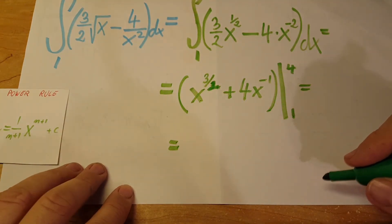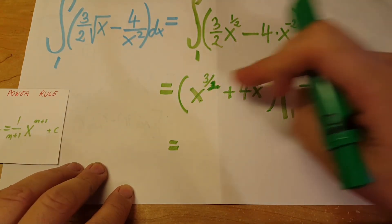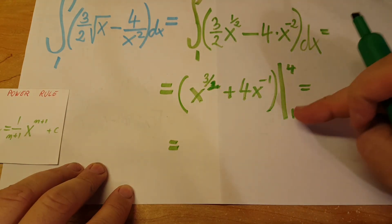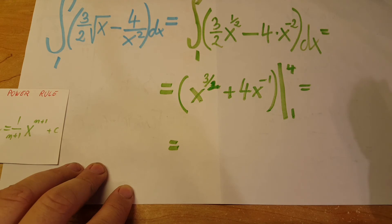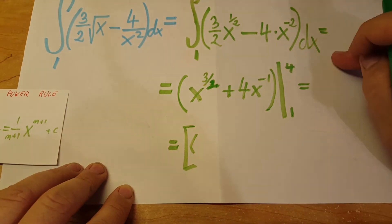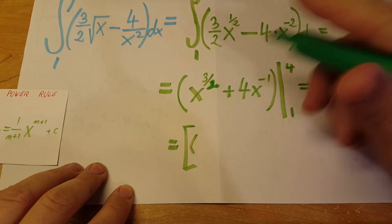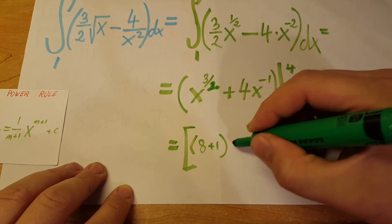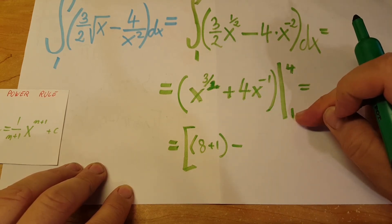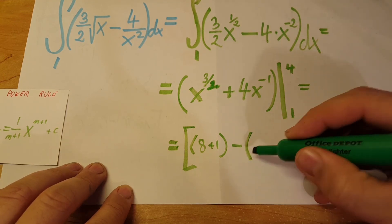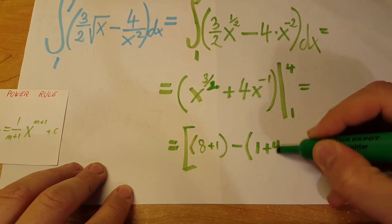We're going to plug in first number 4. Then minus, plug in the second part. Then we're going to have, when we plug in 4, we're going to have 8 plus 1 minus, plug in when we have the 1. 1 here and here. We're going to have 1 plus 4.